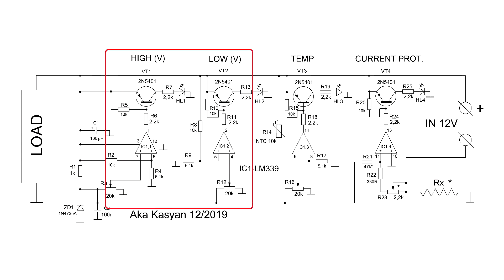How does it work? The first two comparators realize protection against high and low supply voltage. The principle of operation of the circuit is as follows. The reference voltage from the Zener diode is applied to one of the inputs of the comparator, and the voltage to be controlled is supplied to the other input through the divider. If it is above or below the reference, the comparator instantly changes the state of its output.